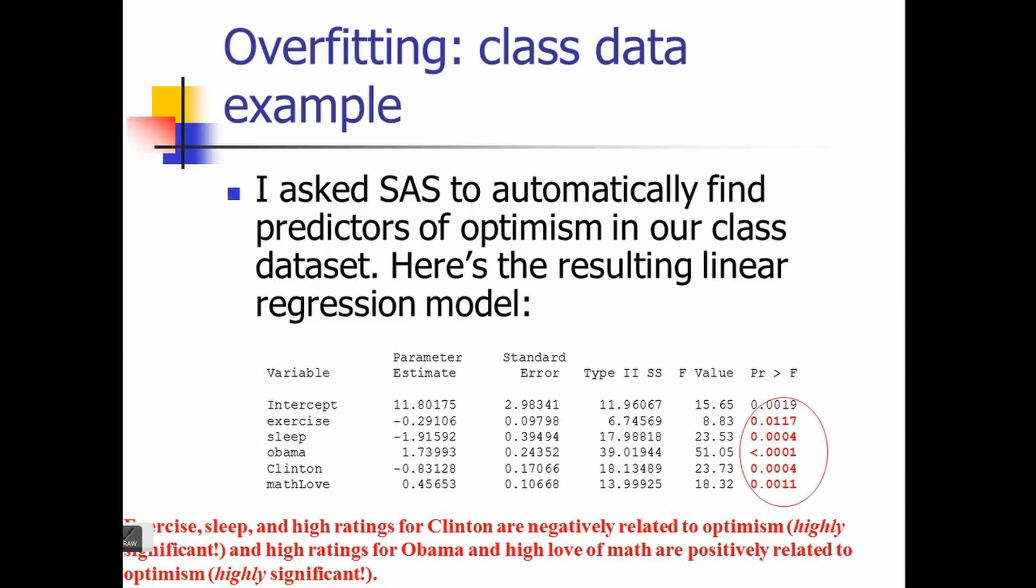Typically we call that training and test data. You build a model in training data and then test it in a separate data set called test data. If you have 100 observations, build a model in the first 70 and test your model in the rest 30. See if it is working in the 30. What's more important is if it is working in the 30 than in the first 70, because the model has already seen the first 70 for training. It's important to have that in mind. That's more or less about regression.